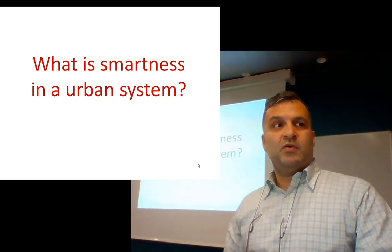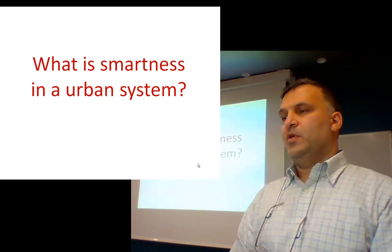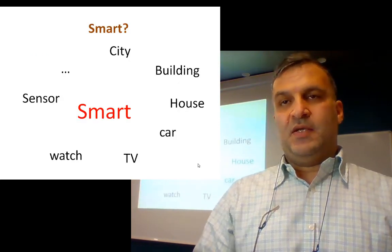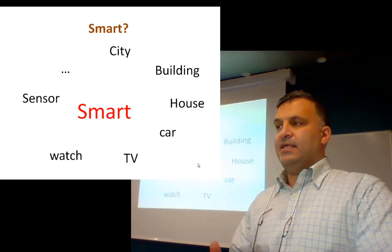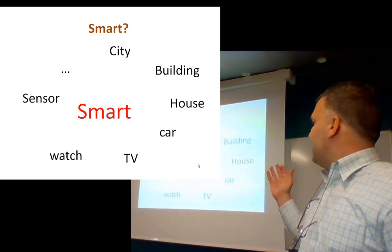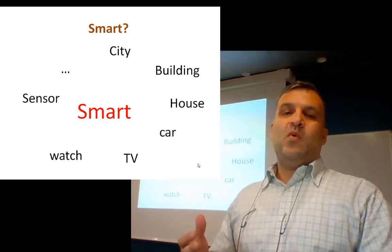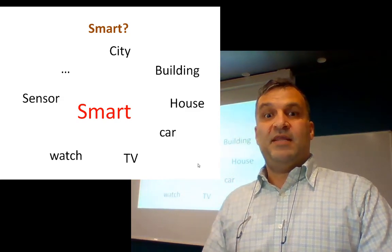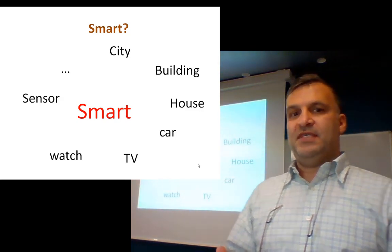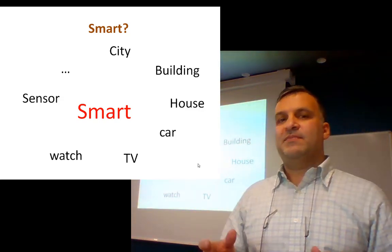Hello everybody, we continue our course. We discuss now what is smartness in an urban system. We talk a lot about smartness — what is smartness? We hear every day something about smart city, smart building, smart house, smart car, smart TV, smartwatch, smart sensor, etc. We use the word 'smart' a lot in advertising. When we talk about a smart city, most of the time we talk about a subsystem of the city.